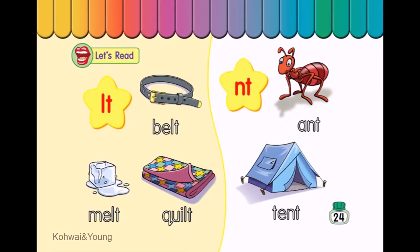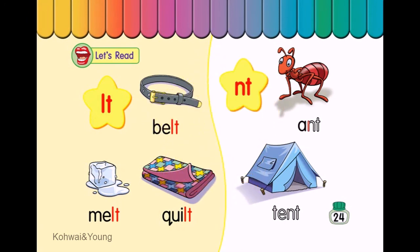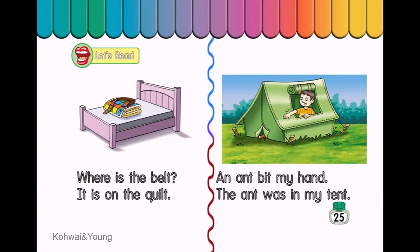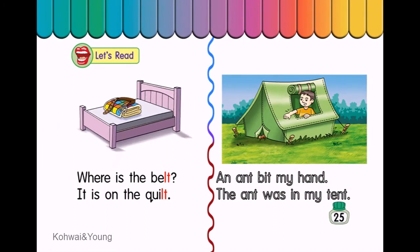Let's read. Belt. Melt. Quilt. Ant. Tent. Let's read. Where is the belt? It is on the quilt. An ant bit my hand. The ant was in my tent.